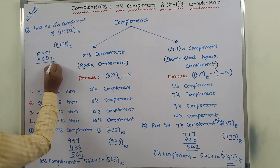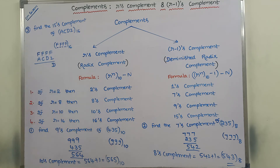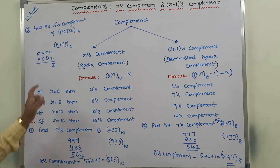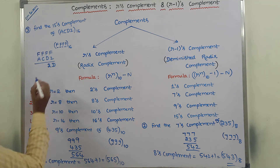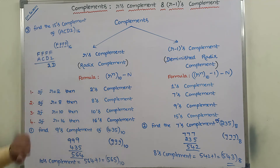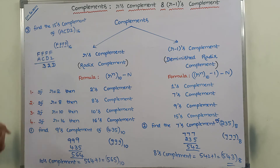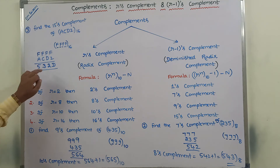We subtract each digit of the given number ACD2 from FFFF. F value is 15: 15 minus 2 is 13, which is D in hexadecimal. 15 minus D (13) is 2. F minus C (12) is 3. F minus A (10) is 5. So 532D is the 15's complement of ACD2 base 16.